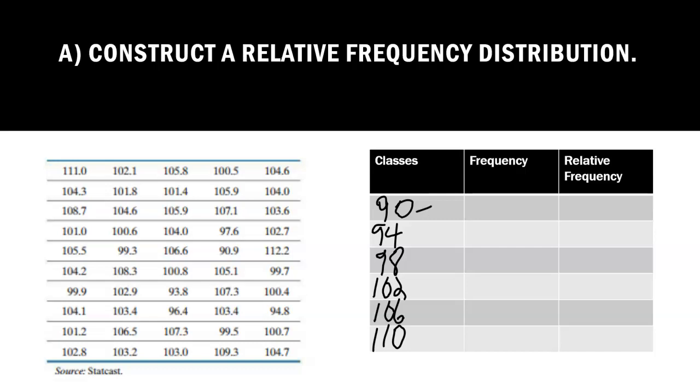Now, this would go to 93, but because we have these tenths, these decimal places, we would say it would stop at 93.9. This one would stop since it stops at 98. The next one starts at 98, so this one would be 97.9. This one would be 101.9. This one would be 105.9.